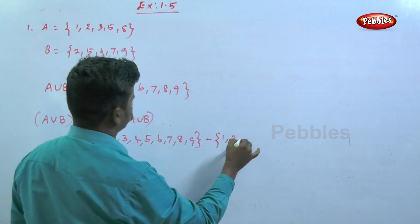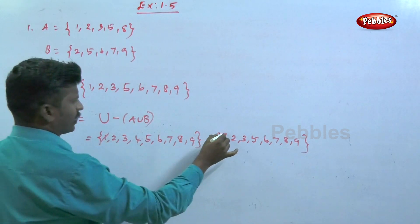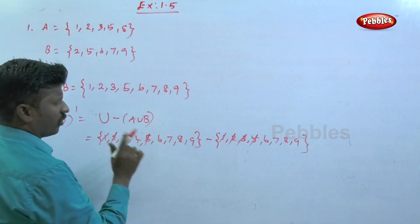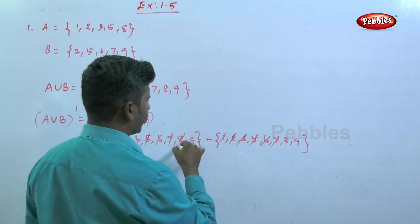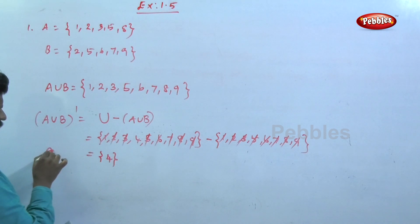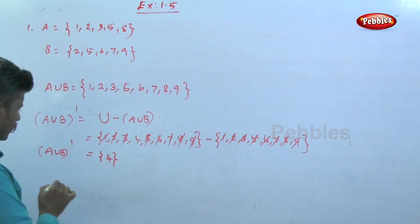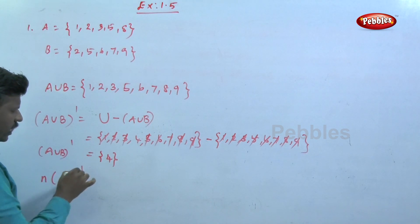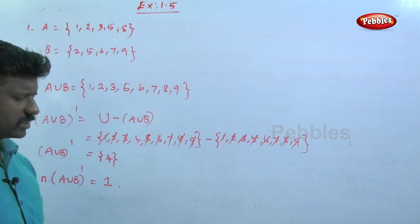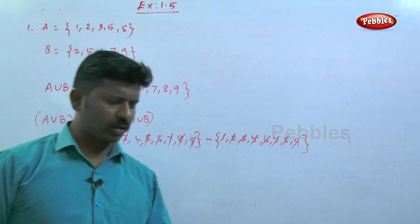Cancel the common elements between the universal set and A∪B: cancel 3, 5, 6, 7, 8, 9. The remaining element in the universal set is just 4. So (A∪B)' = {4}. Therefore n(A∪B)' equals 1 — only one element. Option one is the correct answer.